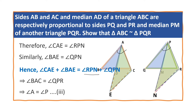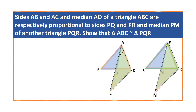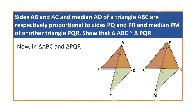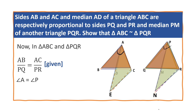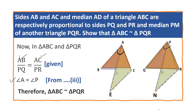Now we have angle A equal to angle P (proved in equation 3). In triangles ABC and PQR, angle A equals angle P, and AB by PQ equals AC by PR (given). Therefore, by the SAS similarity criterion, triangle ABC is similar to triangle PQR. Hence, the result is proved.